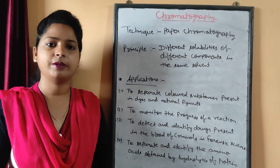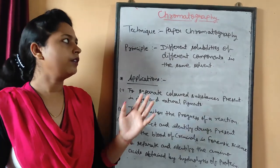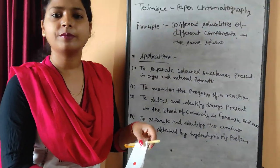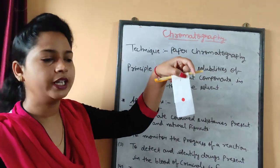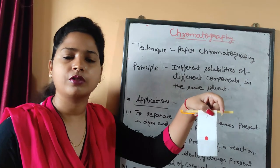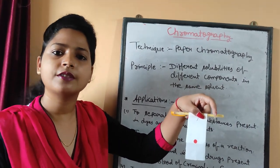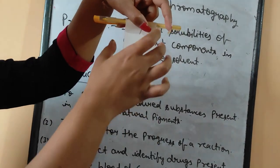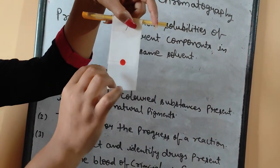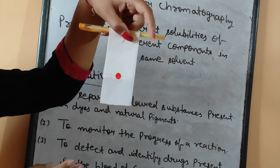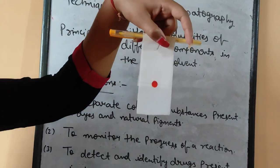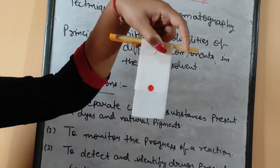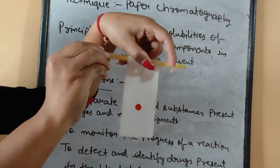Now let's think about the procedure — how can we perform this experiment. This is also an activity given in your NCERT book. This is a chromatography paper, which is different from filter paper or normal paper, though we can also perform the experiment on filter paper. The first step is to make a pencil line on the paper approximately 3 cm above the bottom. The second step is to make a dot with the ink whose color you want to separate — here we have taken red ink.